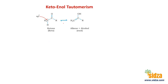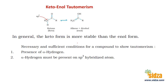For keto-enol tautomerism, certain conditions are required. This is only possible when two important conditions are met. Number one: there must be an alpha hydrogen atom — this is the carbonyl group, the adjacent carbon is the alpha carbon, and the hydrogen attached to it is the alpha hydrogen. Number two: the alpha hydrogen must be present on an sp2 hybridized carbon. When both conditions are fulfilled, the hydrogen can shift from that carbon to the oxygen, forming the enolic form, and vice versa.